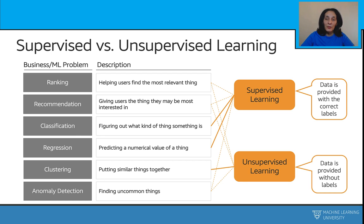Without labels to supervise the training, you might try to find meaningful patterns in the images — figuring out similarities between cats and grouping images into clusters or different piles according to identified similarities. Without labeled images, the ML task would be called clustering, falling under unsupervised learning. Classification and regression are part of supervised learning, while clustering is a form of unsupervised learning. Ranking, recommendation, and anomaly detection are typically supervised, but unsupervised or semi-supervised techniques exist as well.